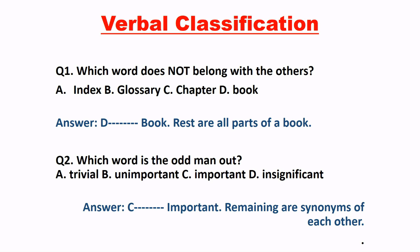Now look at question number two: which word is the odd man out? Ab is type ke question mein aapko kuch words diye hoote hai, aur un charo words mein se joh odd lag raha hai woh aapko alag karna hoota hai. Yahaan par chaar options diye hoye hai: trivial, unimportant, important, insignificant. Toh yahaan par dekhi: trivial, unimportant and insignificant — in teeno ka hi meaning aisa hota hai, aisi cheez joh ki important nahi hai. But C, that is important, ek dum alag ho raha hai. Baqi teen synonyms hai, and important is antonym of all. So here the right answer is C, that is important.